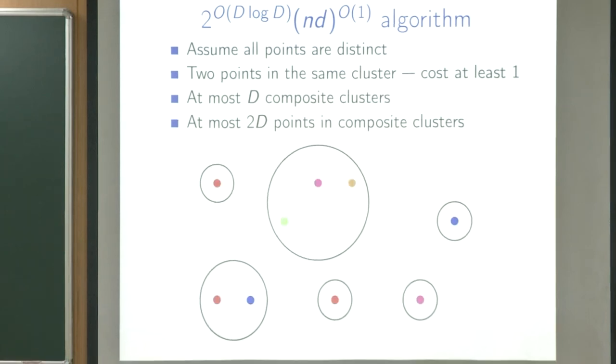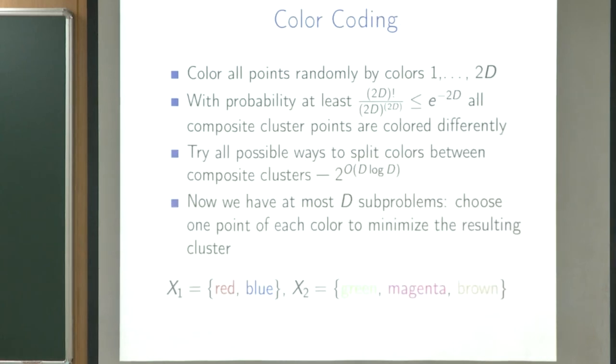We are only interested in finding and clustering these interesting points. The natural approach is color coding: we randomly color the points, and with good probability all of the interesting points will receive different colors. This probability is exponential in D, which is good enough for us.